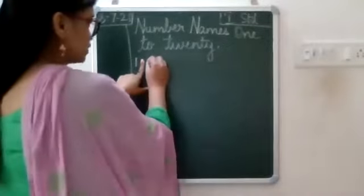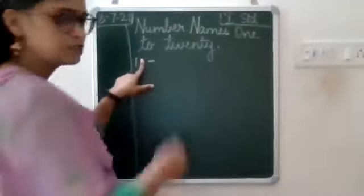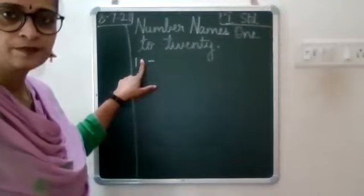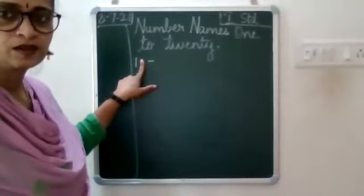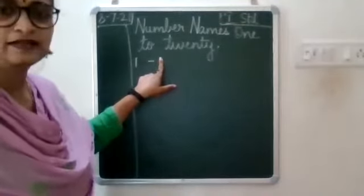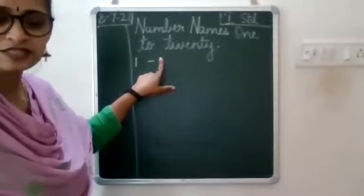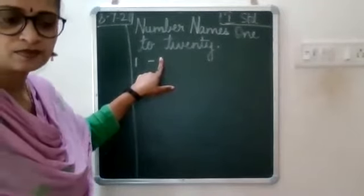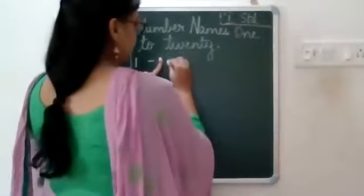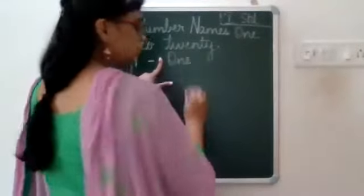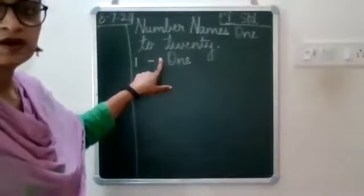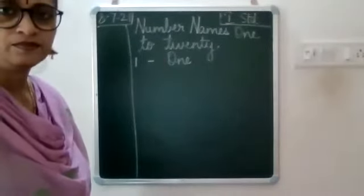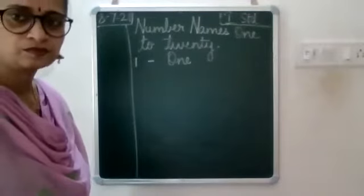Leave one finger space, put a small dash — this is called a hyphen. Then again leave one finger space after the dash, and write O-N-E, one.